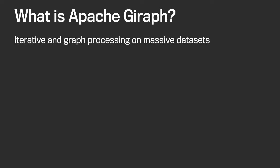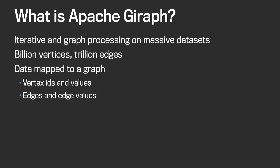Apache Giraffe is a powerful distributed platform we use for iterative and graph processing on our massive data sets. For us at Facebook, that means over a billion vertices and up to a trillion edges. Apache Giraffe operates on top of graphs, so whatever kind of problem you have, you need to map it to a graph using primitives which Giraffe provides — vertex IDs and values related to vertices, as well as edges and values related to them.